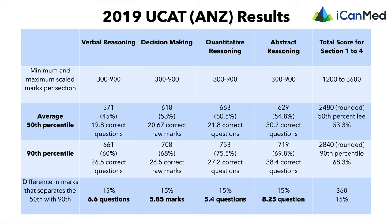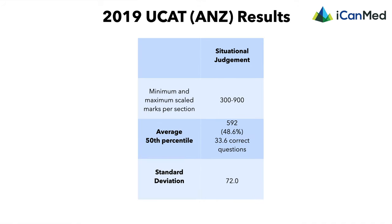Situational judgment is scored a little differently. You are given a score between 300 and 900, and in fact 2019 was the first time UCAT gave a situational judgment score in Australia — before that, and still now in the UK, candidates are simply placed into bands rather than given a numerical score. Situational judgment is also used very differently across universities for medicine entry, and there are quite a few universities that don't even look at the situational judgment score when making interview offers.